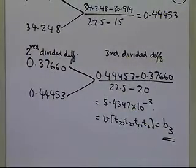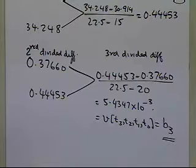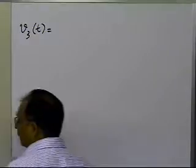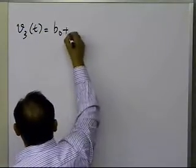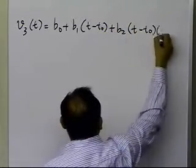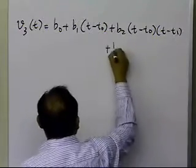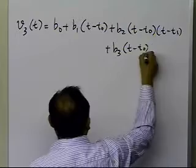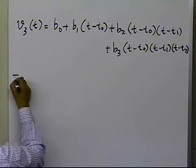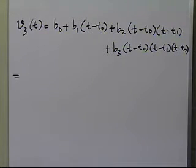I have finished calculating the values of b0, b1, b2, and b3 for the third order polynomial. The third order Newton's divided difference polynomial is of the form: b0, plus b1 times (t minus t0), plus b2 times (t minus t0) times (t minus t1), plus b3 times (t minus t0) times (t minus t1) times (t minus t2). I'm going to substitute the values of b0, b1, b2, and b3, along with t0, t1, and t2.